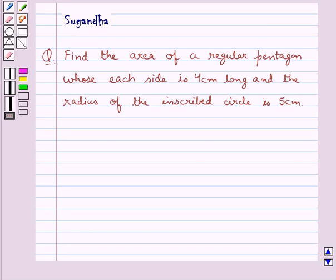Hello and welcome to the session. In this session we discuss the following question: find the area of a regular pentagon whose each side is 4 cm long and the radius of the inscribed circle is 5 cm.